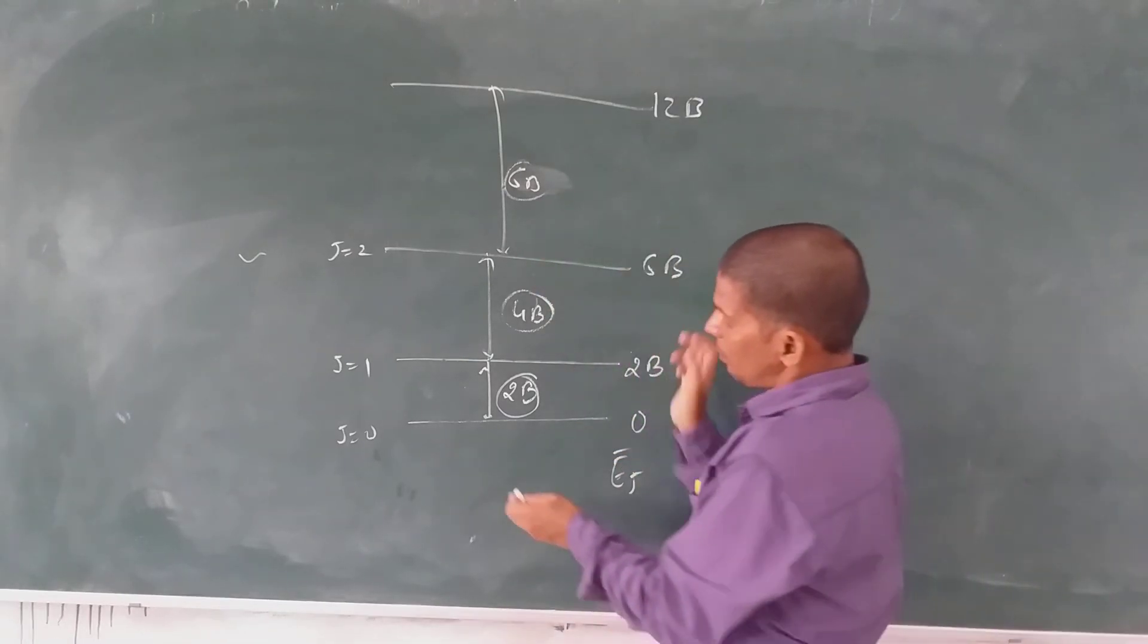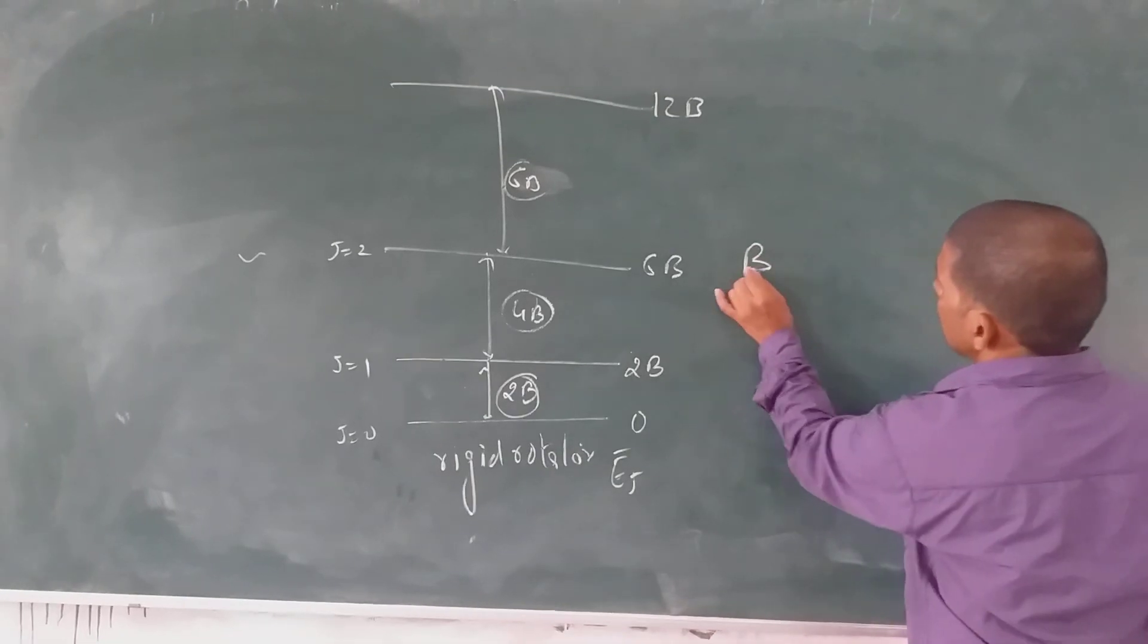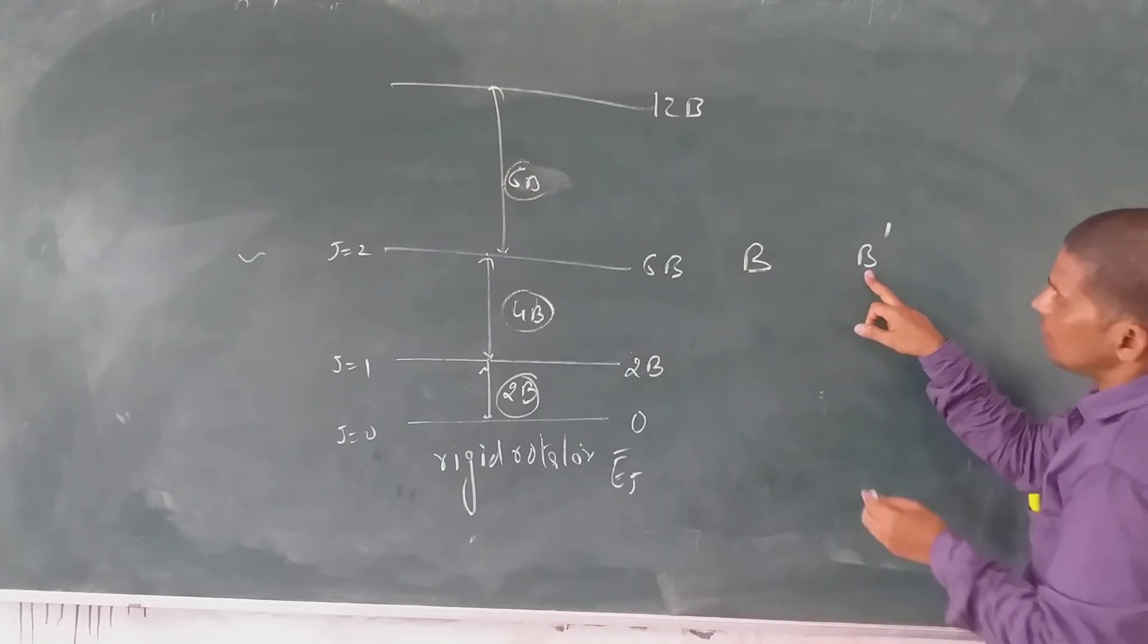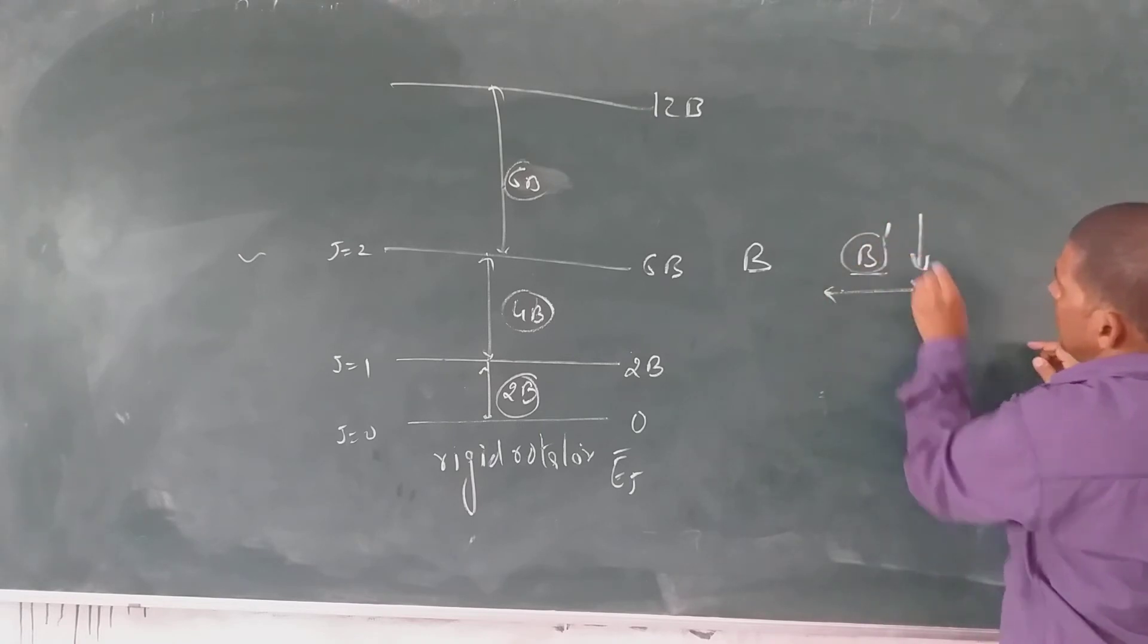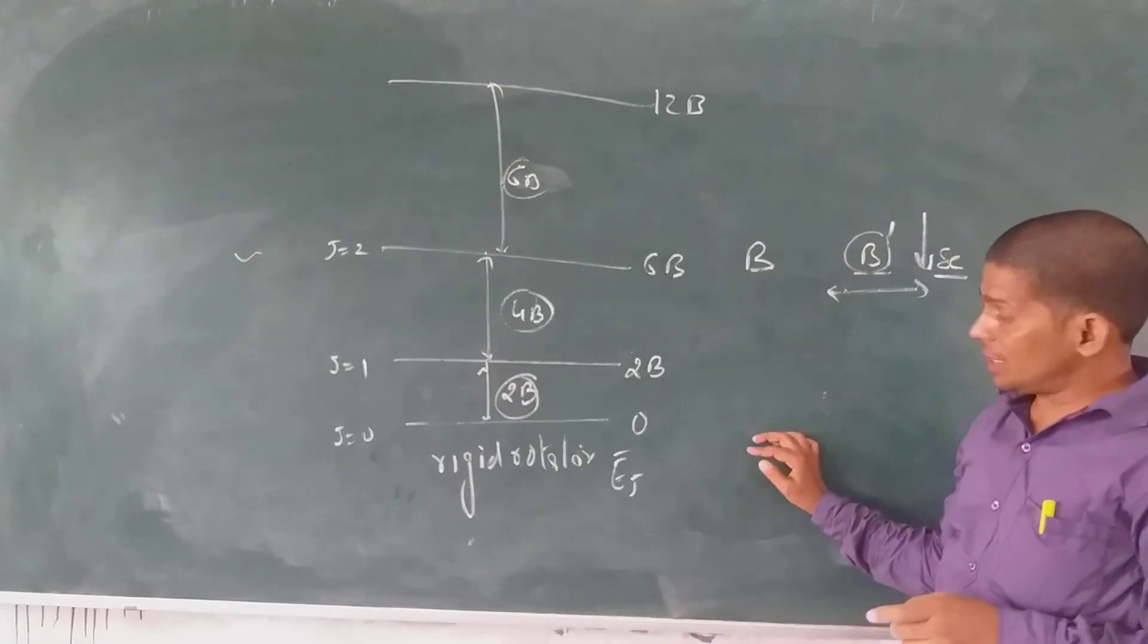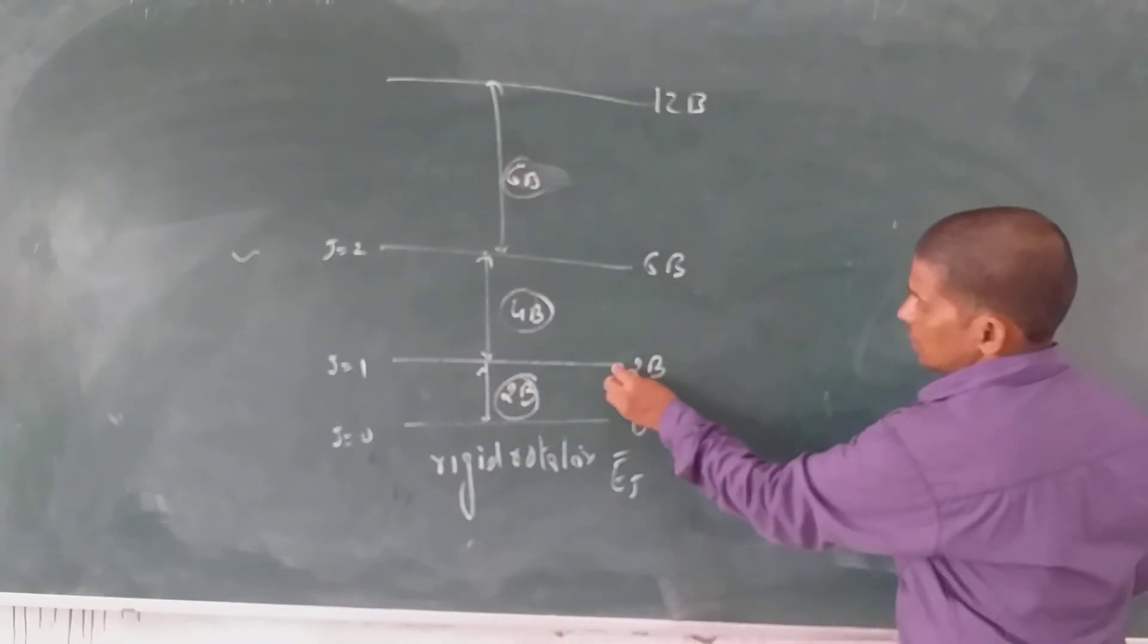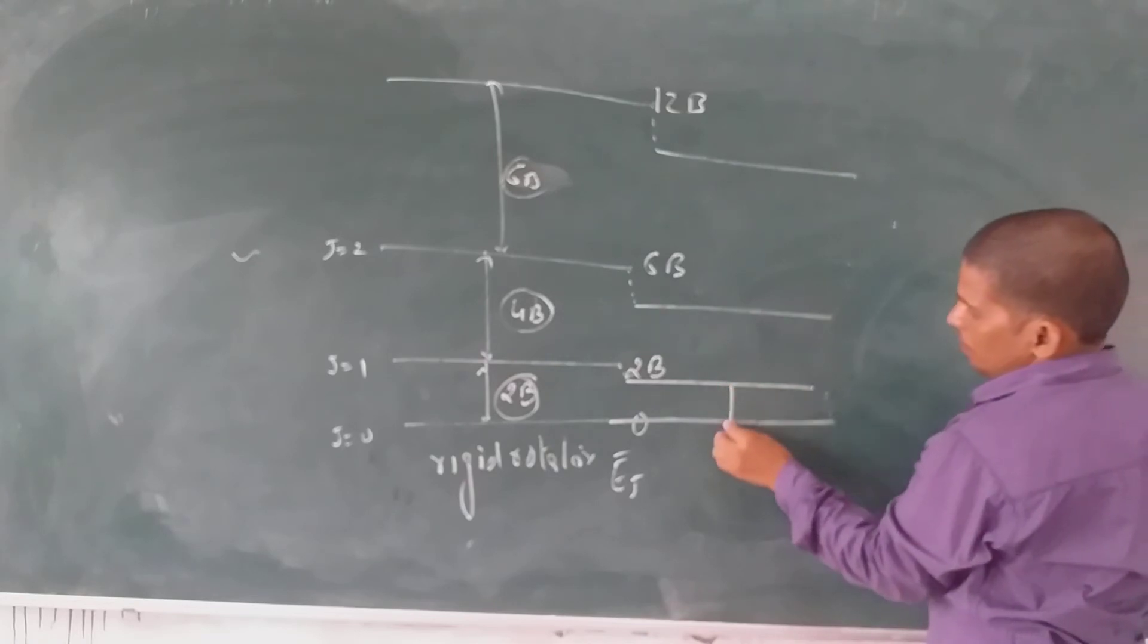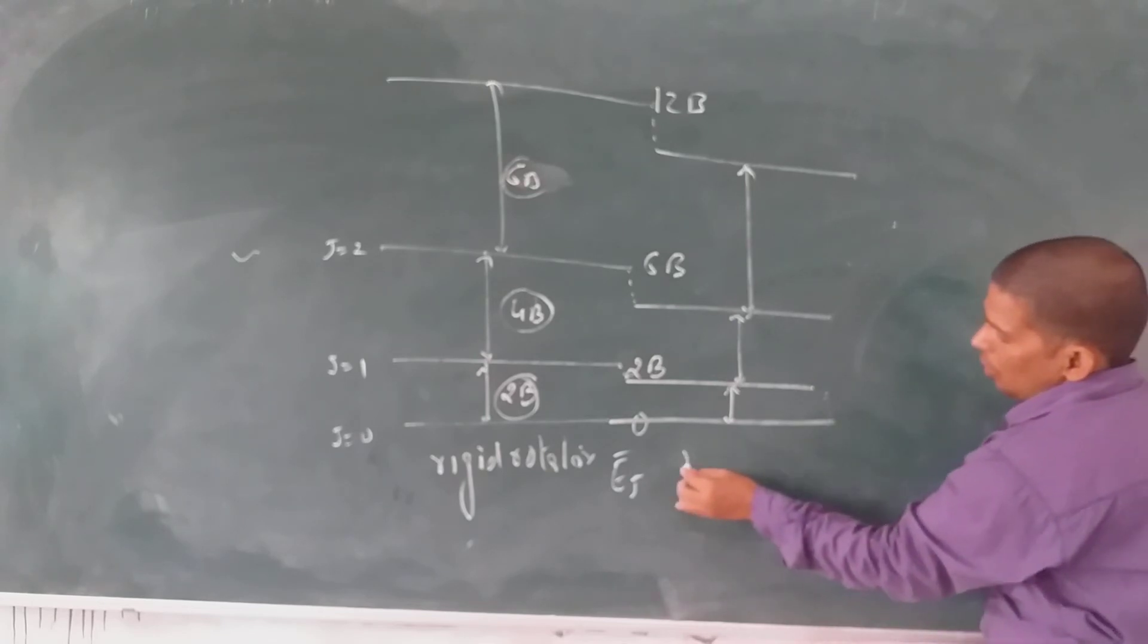So children, this is B for rigid and this is B prime for non-rigid rotator. For non-rigid rotator, B will decrease. The rigid rotator has higher B than non-rigid rotator.